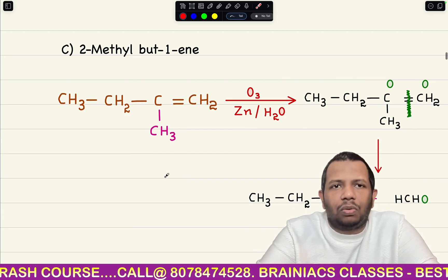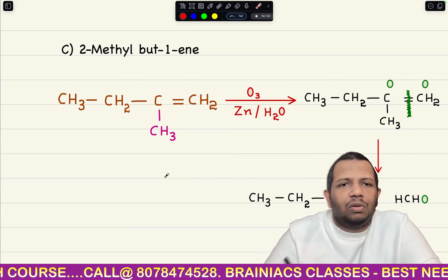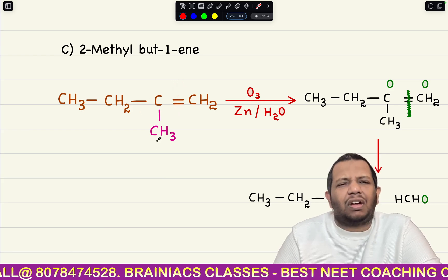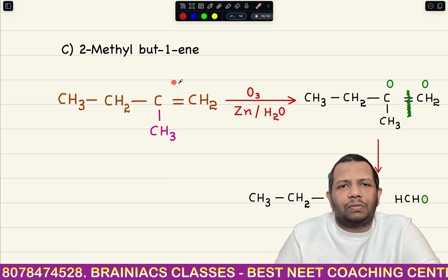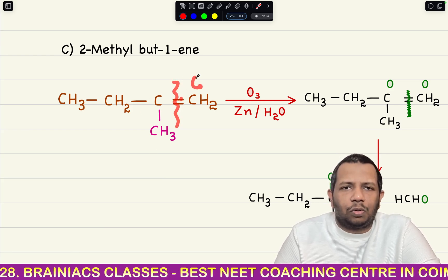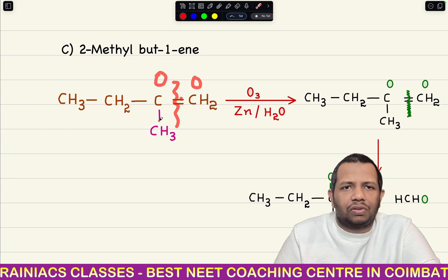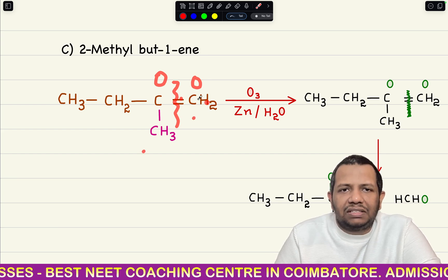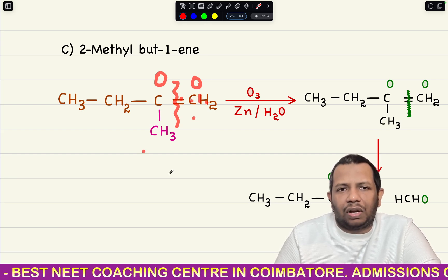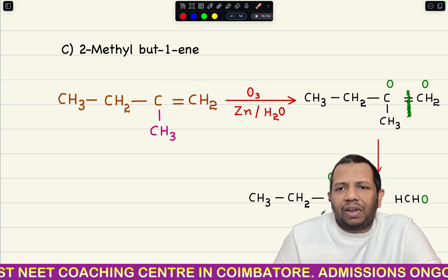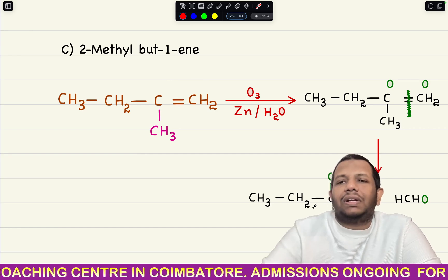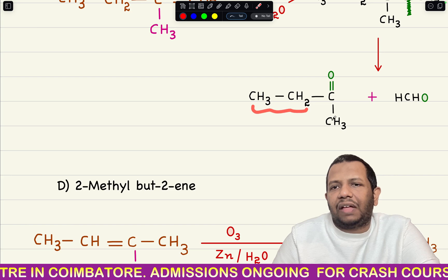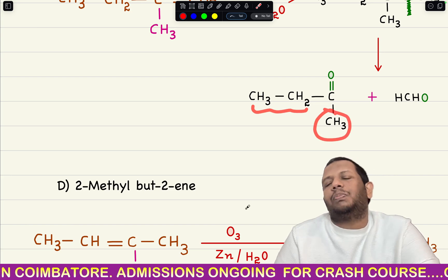For option C — 2-methylbut-1-ene — doing ozonolysis: put oxygen here and here. You are getting HCHO on one side, and on the other side a ketone is formed, but it is not acetone because one group is an ethyl group and the other is a methyl group. So option C does not give acetone.